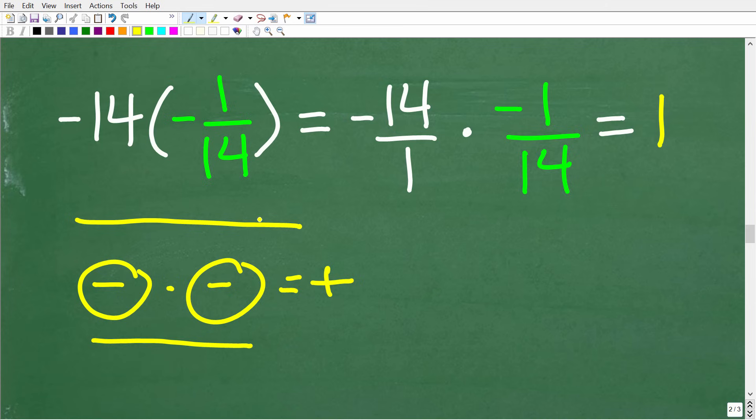All right, so only one more step to get the final answer here. So negative 14 times negative fourteenth. Just know that a negative times a negative is a positive. So again, for those of you that don't know your rules with positive and negative numbers, this is pretty easy stuff to learn.